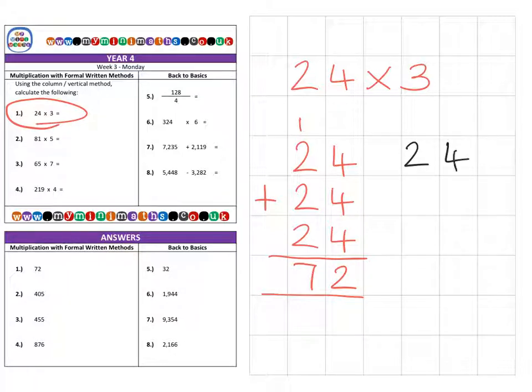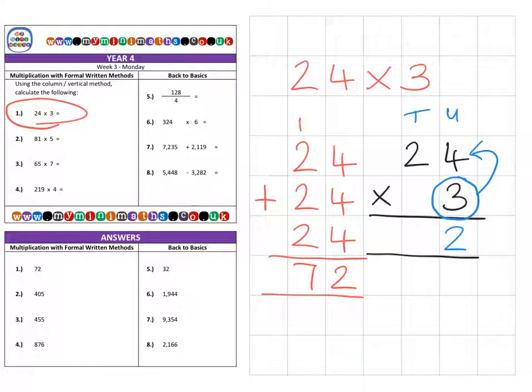If I have 24 multiplied by 3, here we have our units and our tens. First, I'm going to multiply by my units. Three times four is 12, so I place my 2 into the units and carry a 1 for the 10 into the tens column. Then it's 3 times 20, or 3 times 2, which is 6 plus the 1 that we carried over, which is 7 for a final answer of 72.